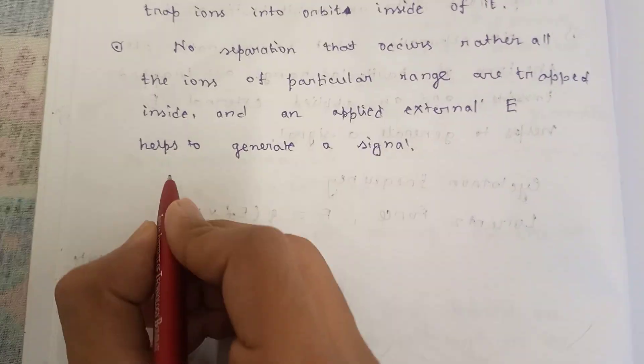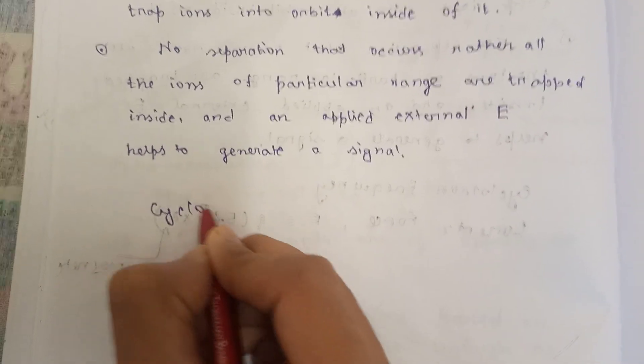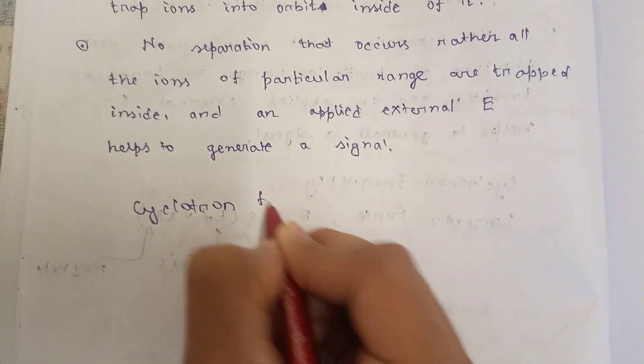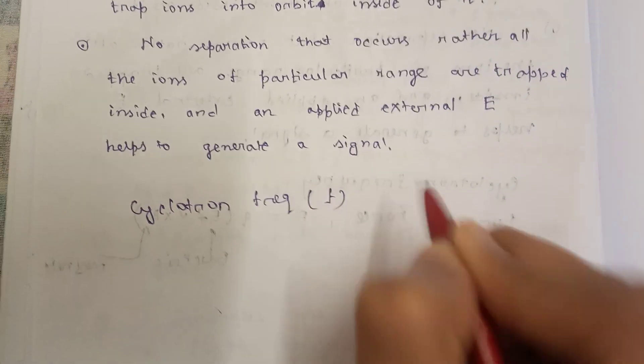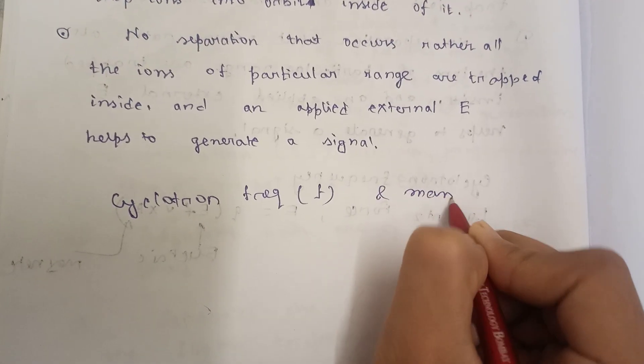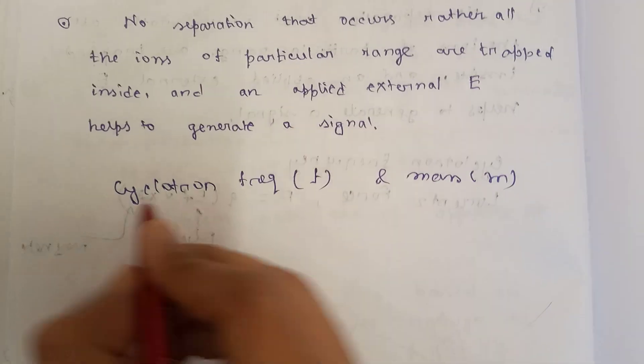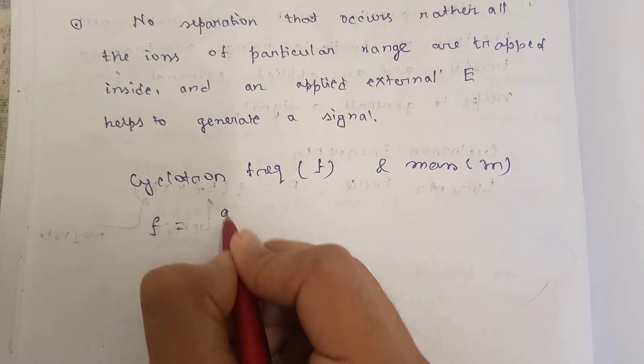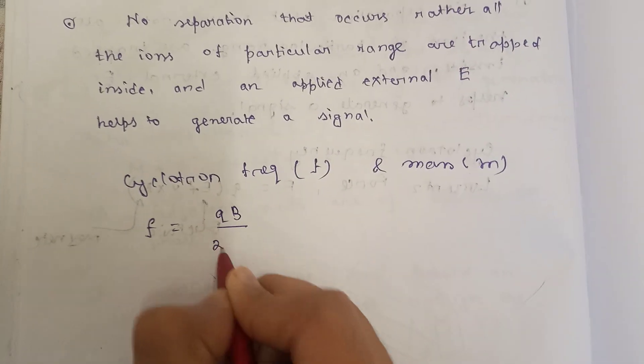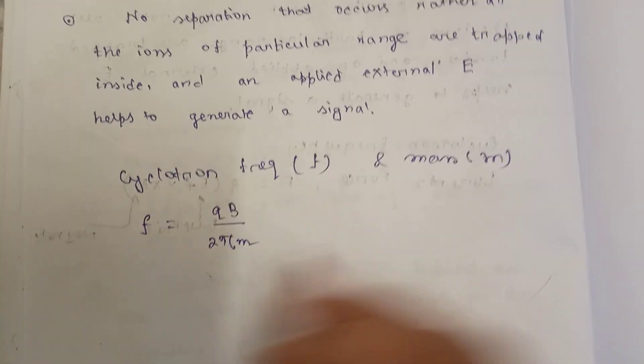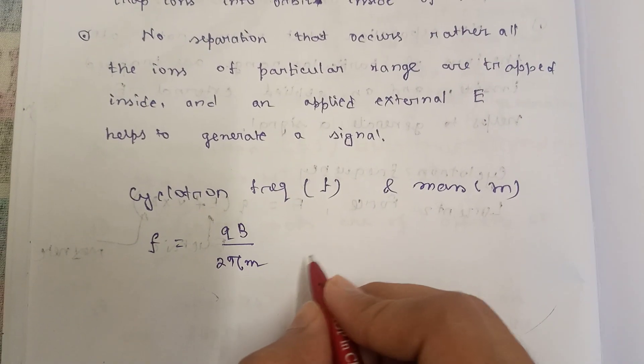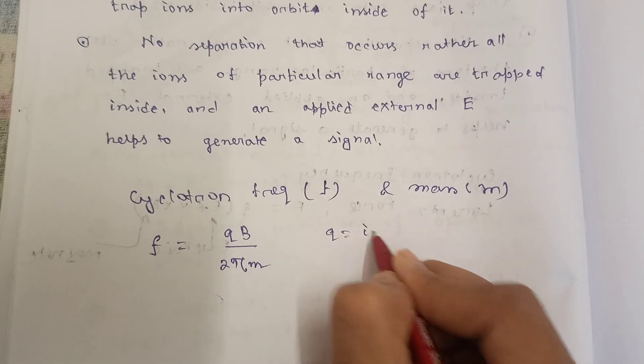Now there is a relationship between cyclotron frequency and mass. It is f = qB/(2πm), where f is the cyclotron frequency and q is the ion charge.